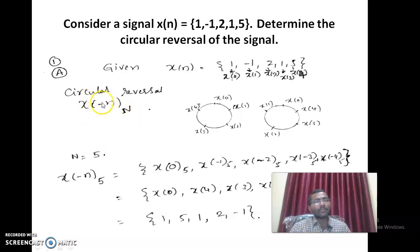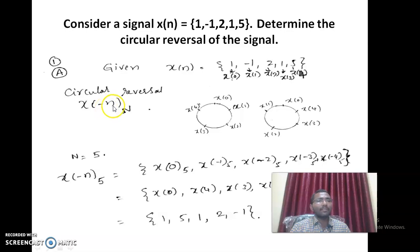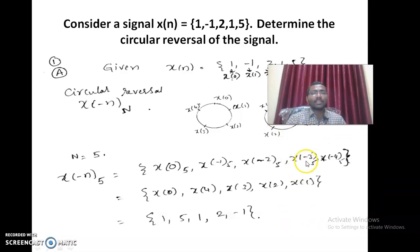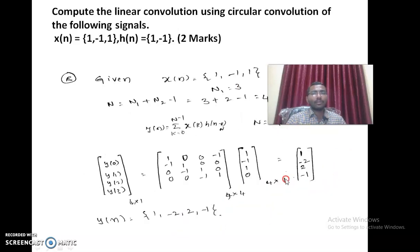In more formal terms, this is x of minus n modulo N. The modulo N operation always brings whatever is in the parenthesis to the range 0 to N minus 1. If the value is less than 0, add capital N to bring it to that range; if greater than N, subtract integer multiples of capital N. So x of 0 modulo 5 is x of 0, x of minus 1 modulo 5 is x of 4, x of minus 2 modulo 5 is x of 3, x of minus 3 modulo 5 is x of 2, and x of minus 4 modulo 5 is x of 1. The answer is the same.